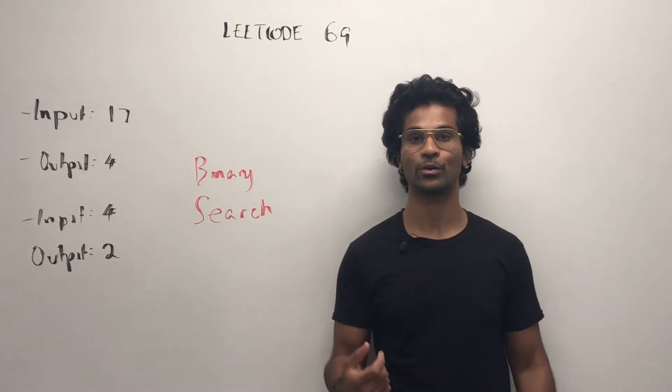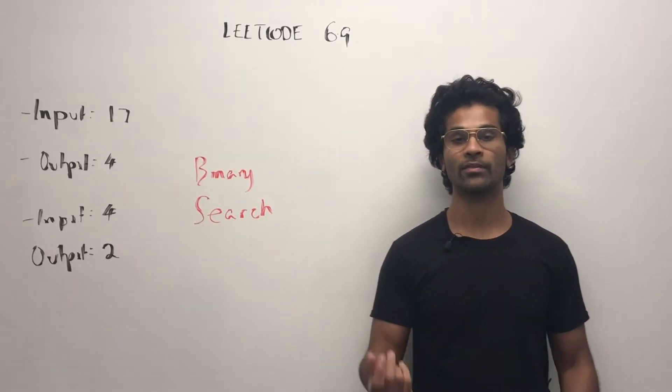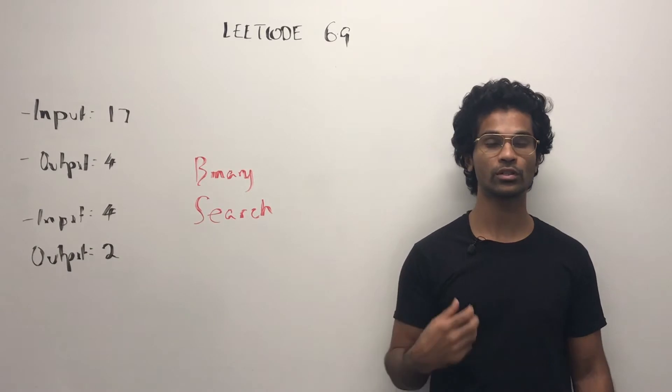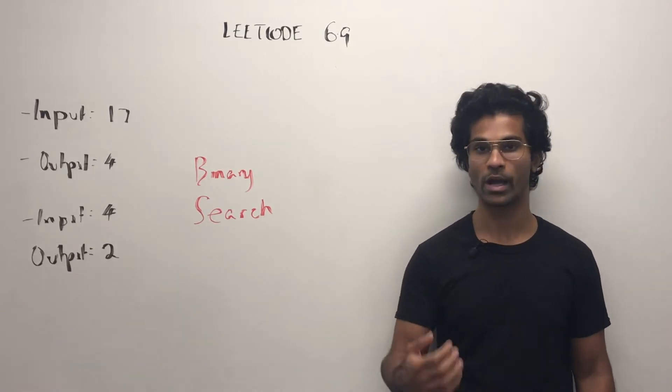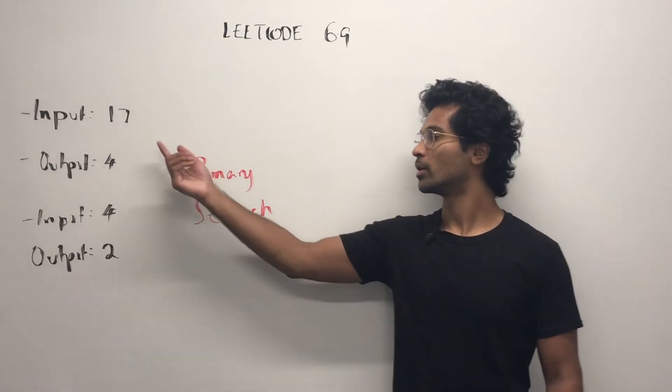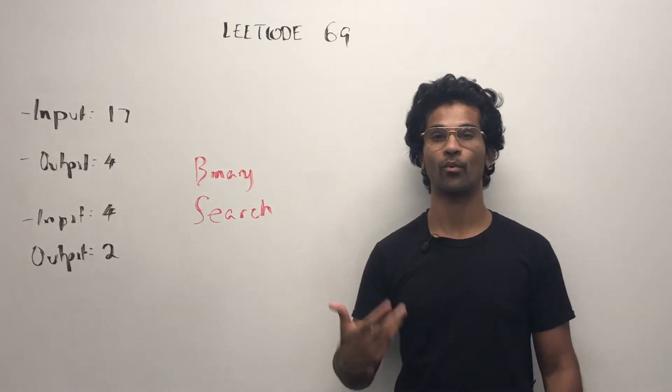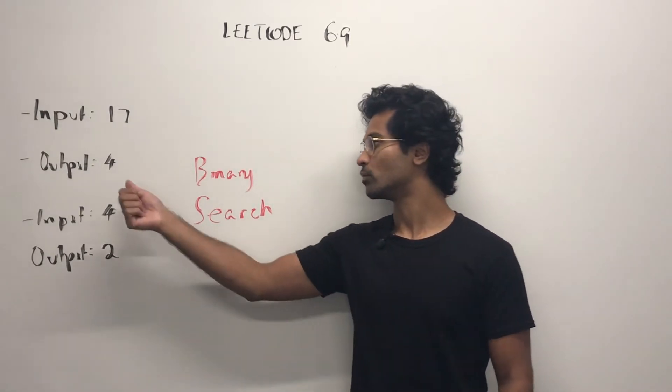But if we have a number which is not a perfect square, like say 17, we have to give the number which is closest to the square root, also a whole number. So it's going to be like 4.12 something like that, so we have to round it down to 4.